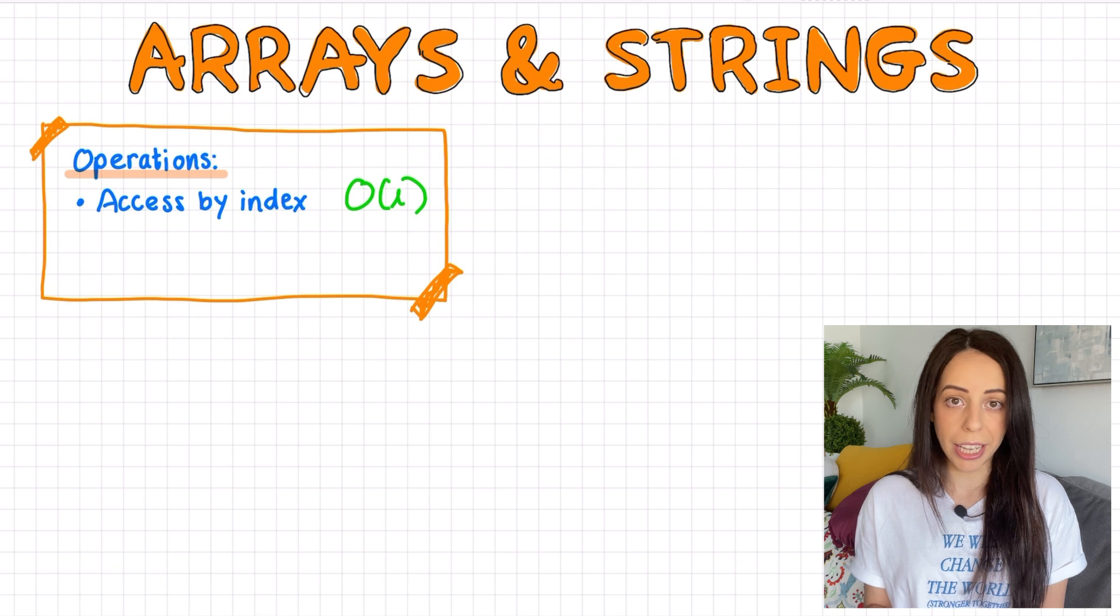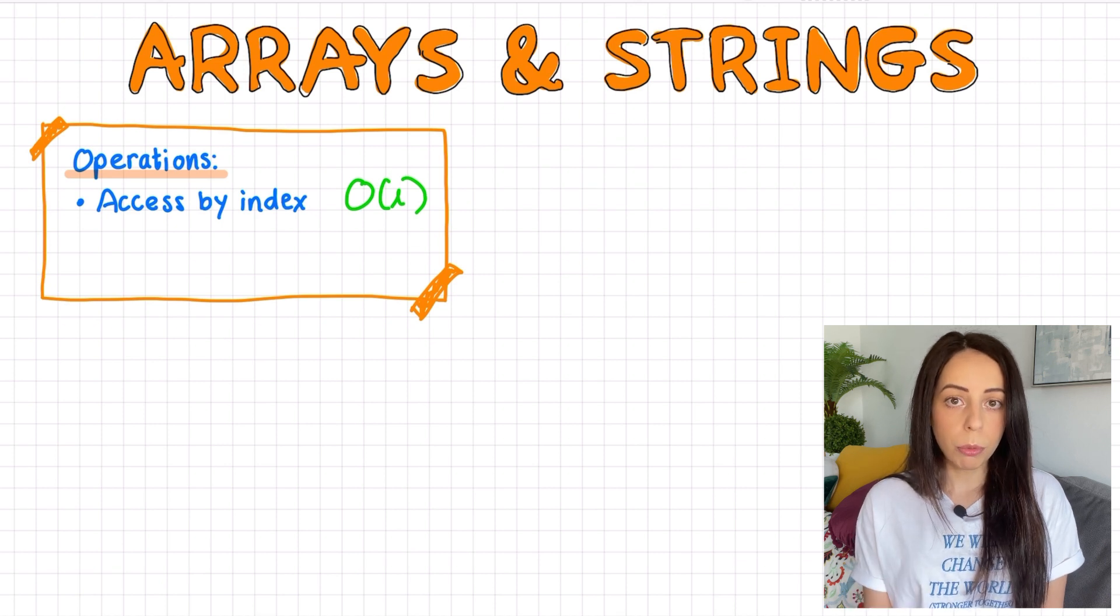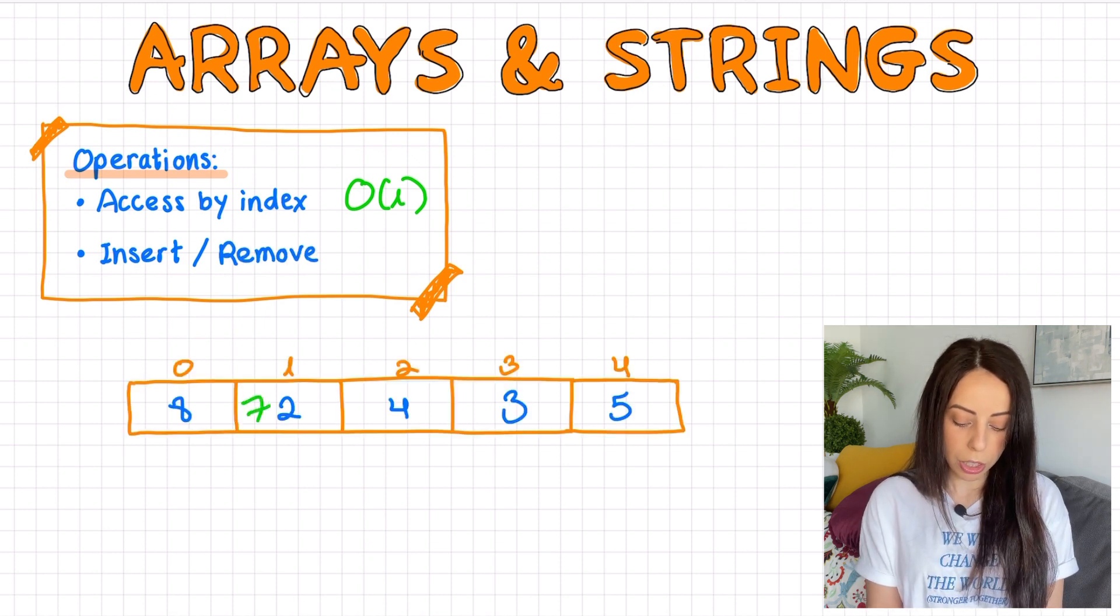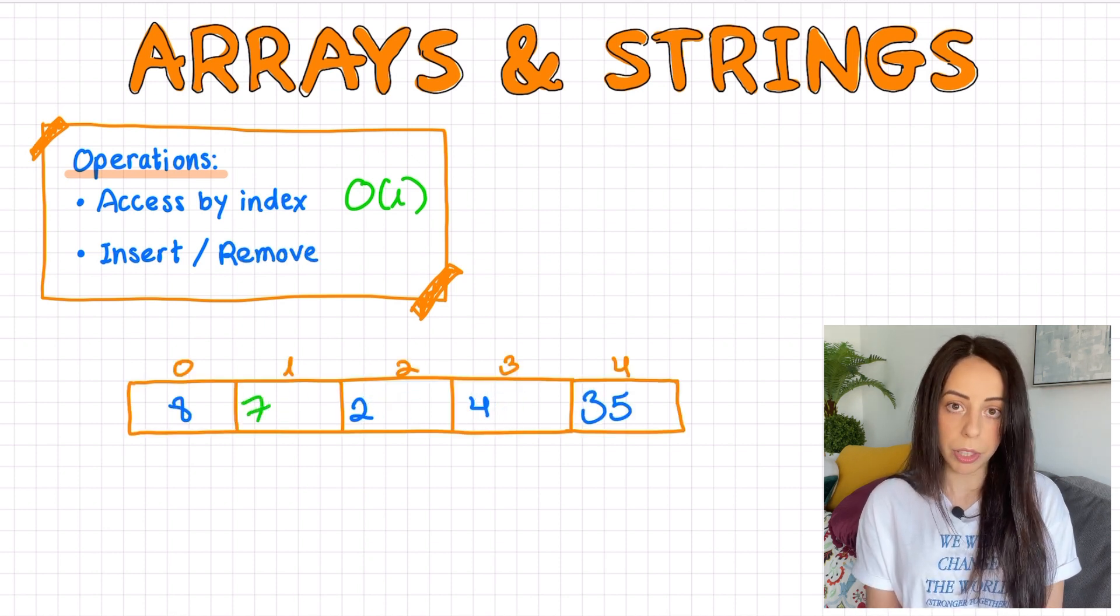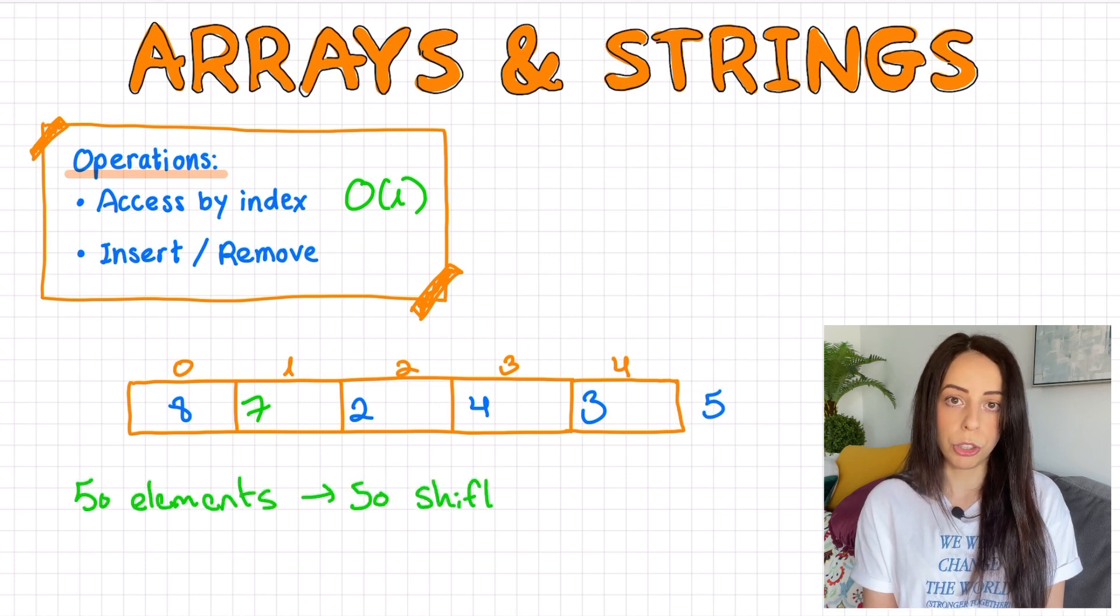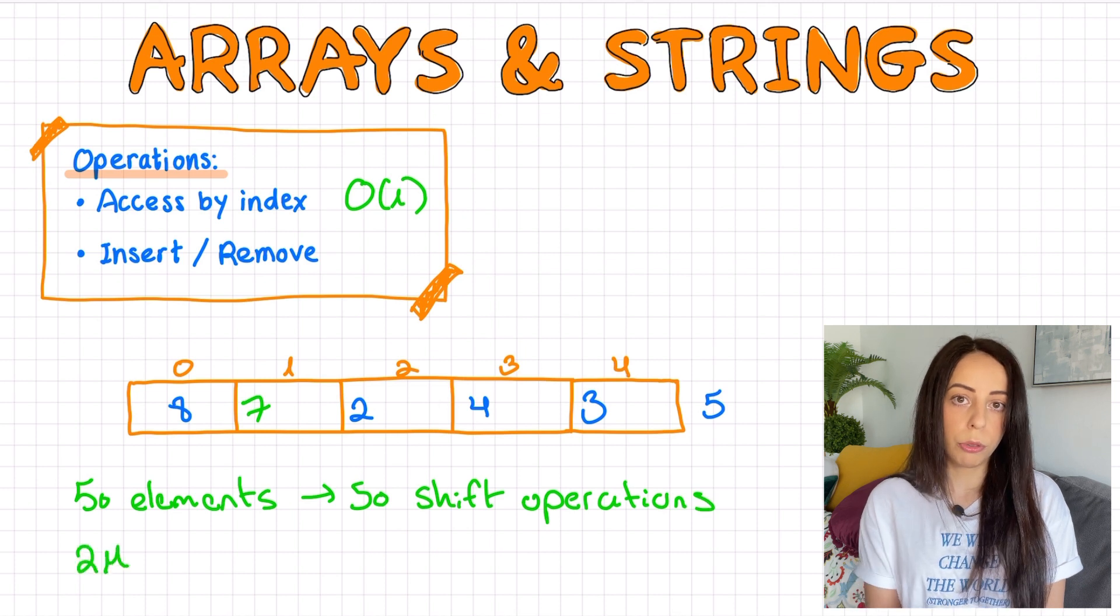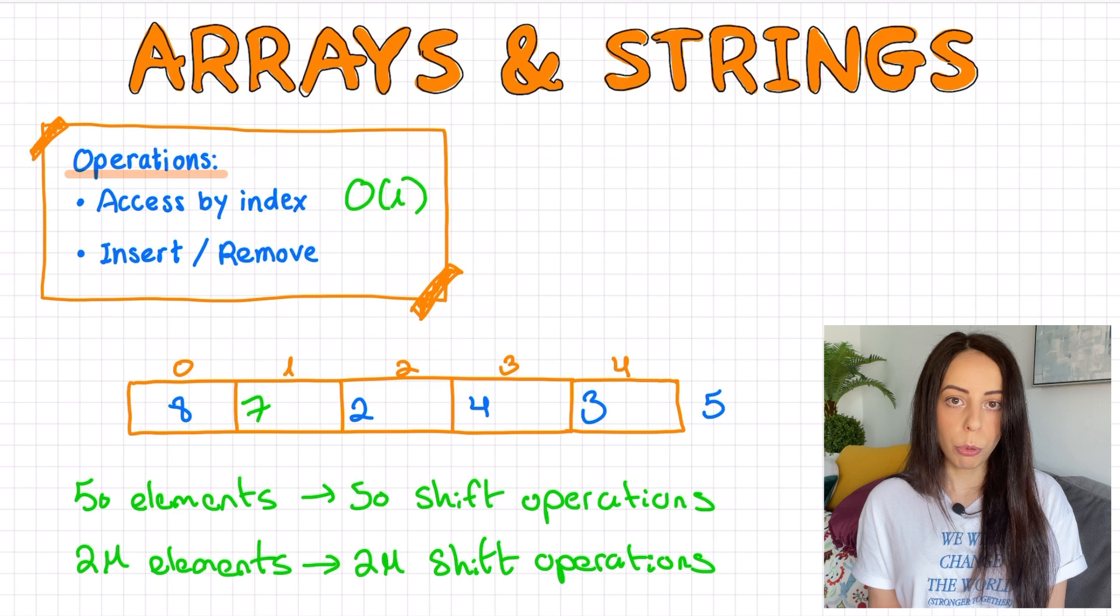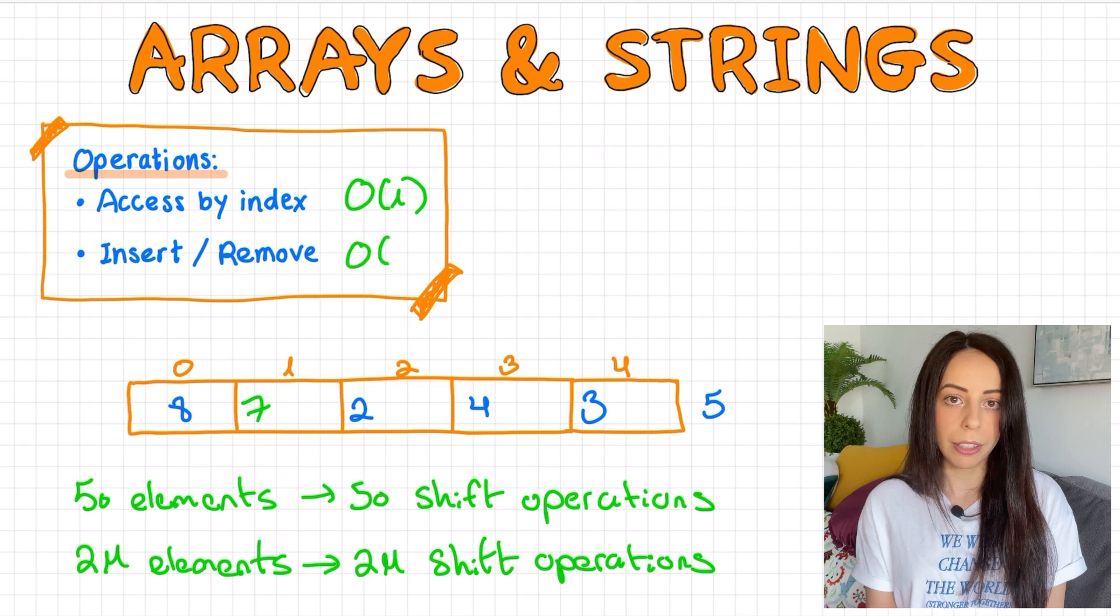Arrays provide the fastest access by index. You will not be able to top it with any other data structure. The problem with arrays is that they are very bad at inserting and removing elements. For example, if I had to insert a value at this position, I would have to shift all other N elements one spot to the right. So for an array of 50 elements, I would have to perform around 50 shift operations. For an array of 2 million elements, I would have to perform around 2 million operations. When the number of operations goes linearly with the number of elements, we say that the time complexity is linear, also known as O of n, which is a very bad time complexity for this simple task.